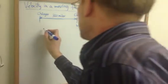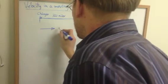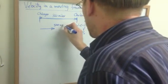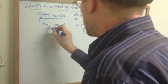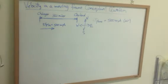So here's the pilot. His velocity vector is 500 miles per hour. This is the velocity of the plane through the air. He can go 500 miles per hour.